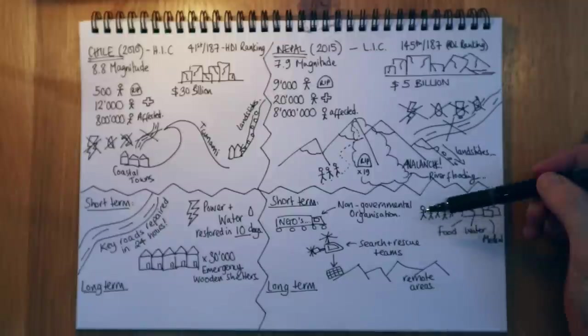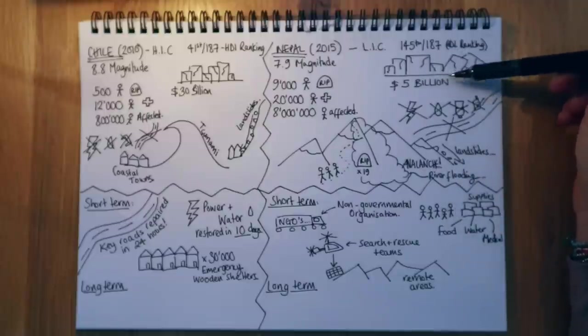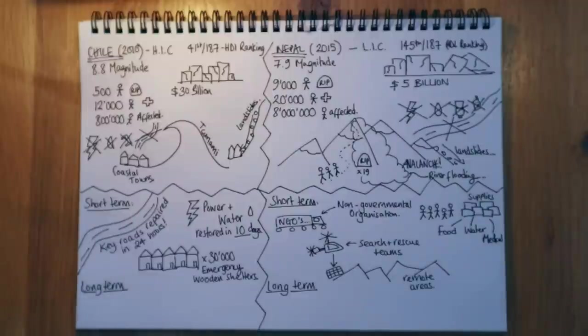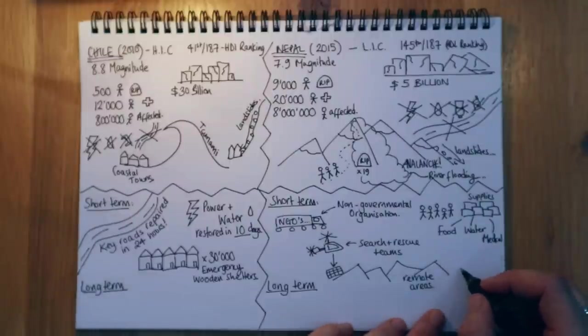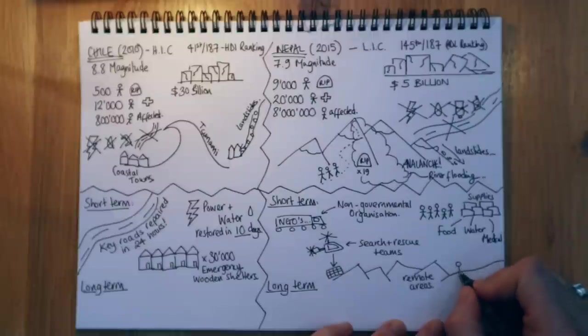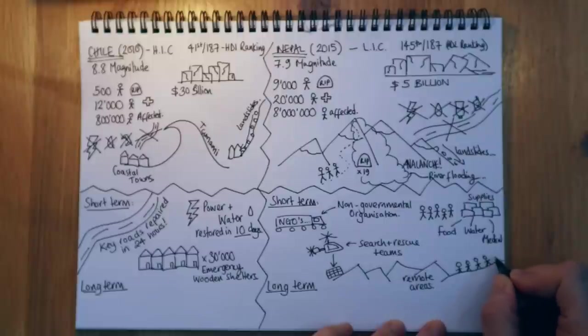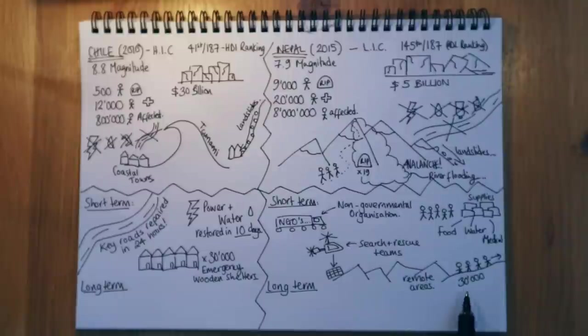Another thing they did is they just urged people to leave Kathmandu. Now Kathmandu is the capital of Nepal and it's a very crowded area with lots and lots of buildings, lots and lots of people. And they just said, you know, if you can get out of the city, do get out of the city. And so people just took it upon themselves to go and stay with friends, family, in other places. And they just left, evacuated. And 30,000 people chose to do that in the short term just to get away from Kathmandu.